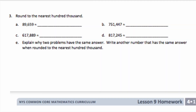For number three, we're going to round to the nearest 100,000. For the first one, 89,659 — there are zero 100,000s, so this is between 0 and 100,000. It is more than half of 100,000, which is 50,000. So we're going to round up to 100,000.